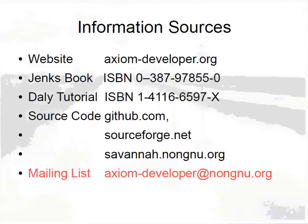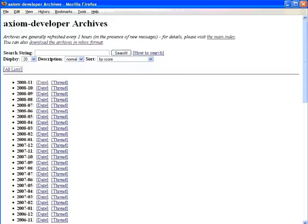All activity on the Axiom project is reflected on the axiom-developer@nongnu.org mailing list. All bugs, comments, and questions should be posted to this list. All patches and announcements go to this list as well. The axiom-developer mailing list is available online at lists.gnu.org on the Savannah website, and the entire archive of Axiom project mail is available online.